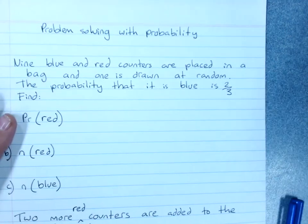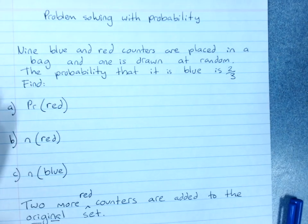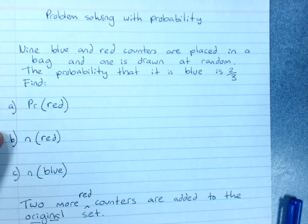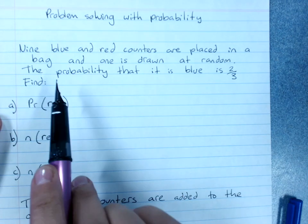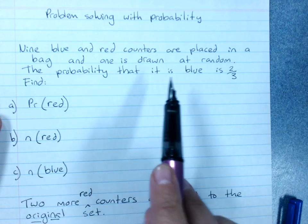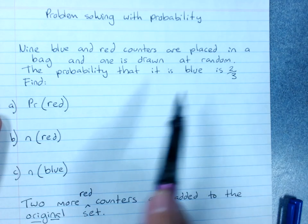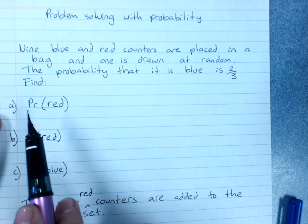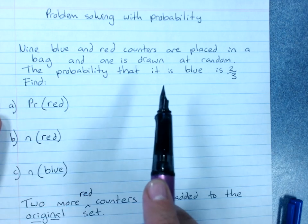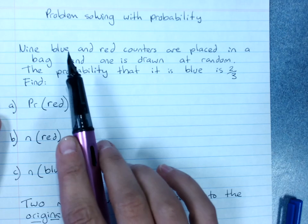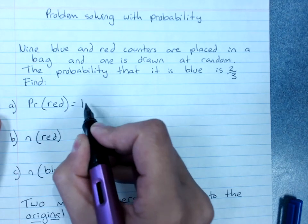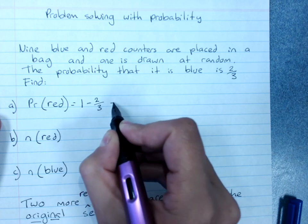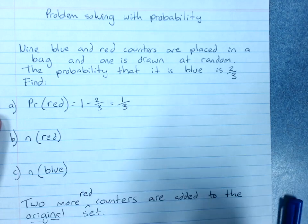We do get a lot of problem-solving questions with probability, such as this one. Nine blue and red counters are placed in a bag and one is drawn at random. Now they haven't told me how many of each, but they've told me that the probability that it is blue is 2 thirds. Find the probability that it's red. Now red is the complement of blue in this case because there's only blue and red. So that will be 1 minus 2 thirds. So the probability of it being red is 1 third.